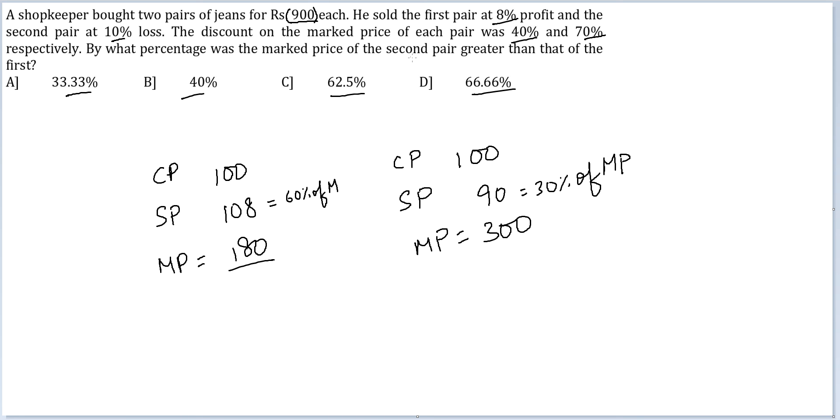By what percentage was the market price of the second pair greater than that of the first? The difference between them is 120. So the percentage that you are seeking is 120 by 180 into 100 which is nothing but 66.66%. Therefore option D should be your answer.